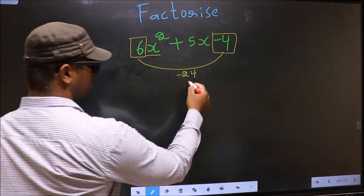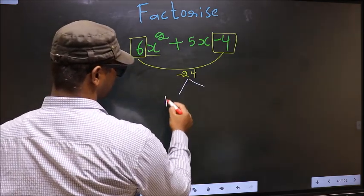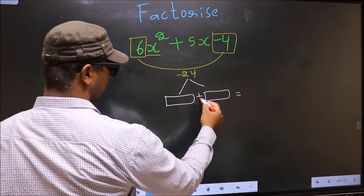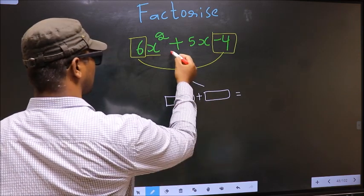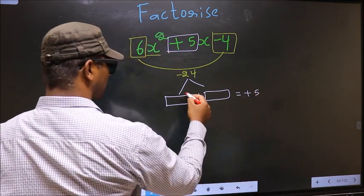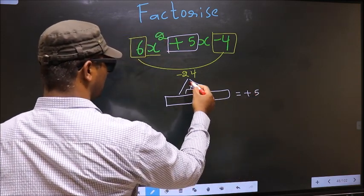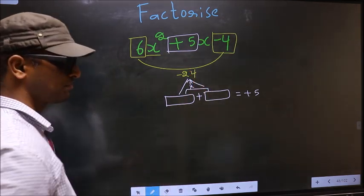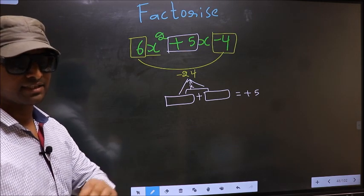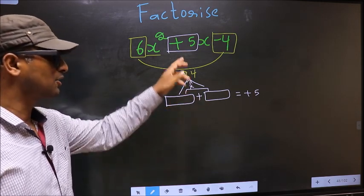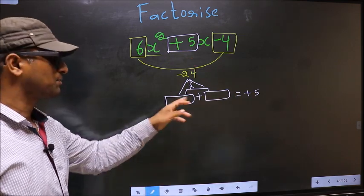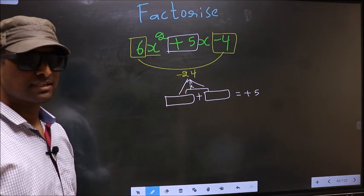Next. Now you should look out for two numbers such that when you add these two numbers you get the middle coefficient, that is +5, and also when you multiply them you get -24. I repeat: look for two numbers such that when you add them you get +5, and when multiplied you get -24.